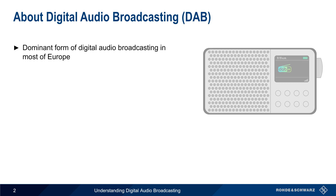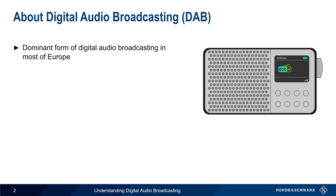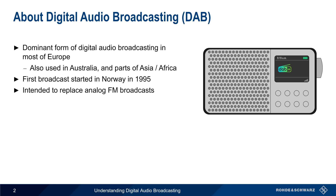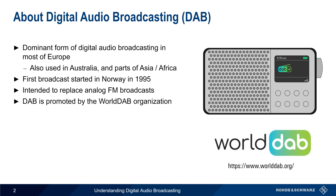DAB is the dominant form of digital audio broadcasting in most of Europe. It's also used in Australia and some parts of both Asia and Africa. The first European DAB broadcast was in Norway in 1995, and the longer-term vision is that DAB would eventually replace analog FM broadcasts. DAB is promoted by the World DAB Organization, and DAB technical standards are published by ETSI.